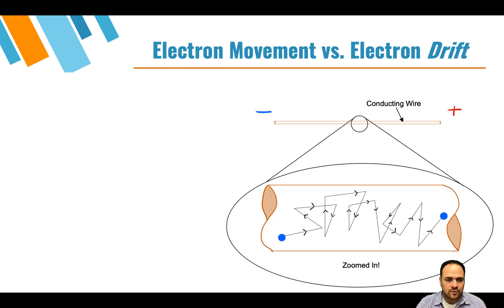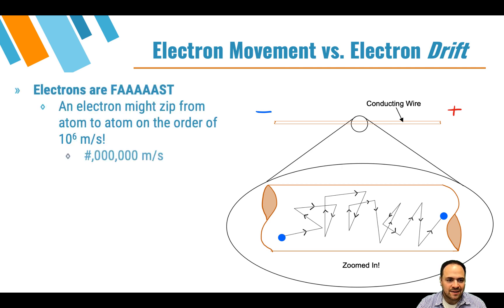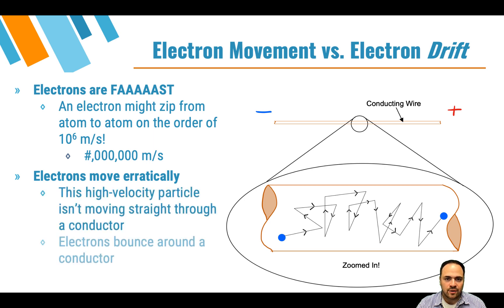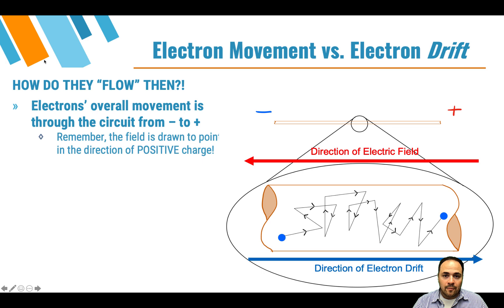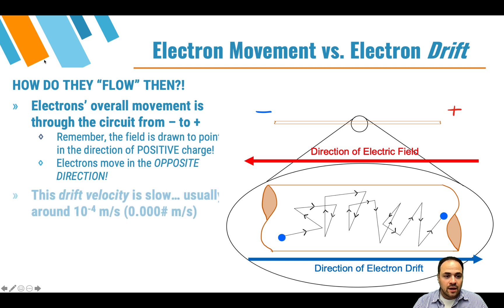Now when electrons are moving around from atom to atom through a wire, they move pretty quick. They can move on the order of 10 to the 6 meters per second, so somewhere in the millions of meters per second. And that's really fast, but they move really erratically. So they're not just moving through the circuit in a straight line at this high velocity. They're bouncing around the conductor. So how is it that they get through a wire or a circuit? Electrons overall will move from negative to positive against the electric field. Remember, an electric field is drawn as if the charges moving were positive.